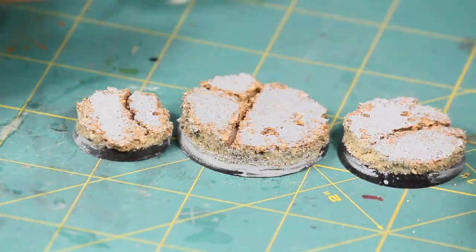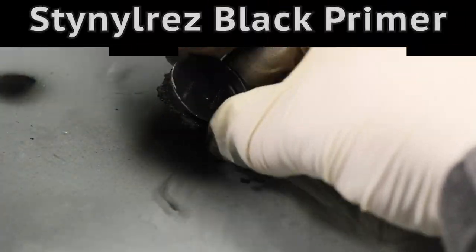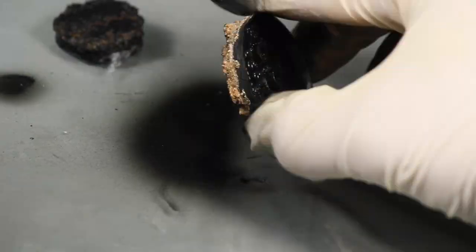With the modeling done it was time to paint. I primed each one with some black primer through my airbrush but you could also do this with a rattle can.